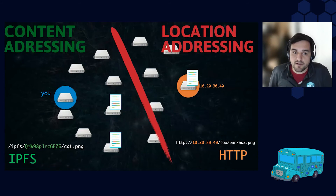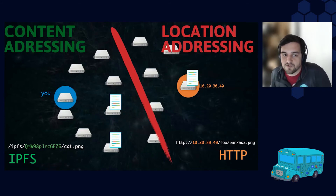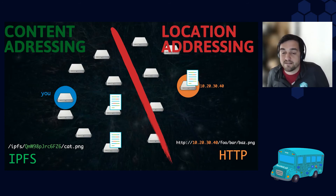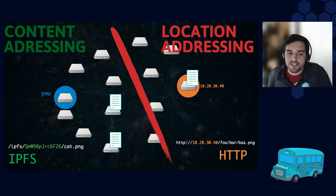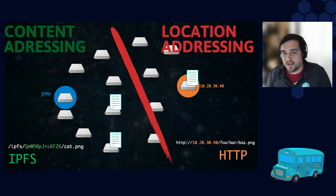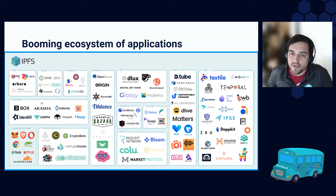In an example similar to before: in the case of location addressing, if there is a network split and the file is on the other side, you cannot access it anymore. But with IPFS, if the file is on your side, you can ask any machine, and when they deliver the file to you, you can validate that it is indeed the one you wanted. Before, you had to trust a central point of authority to give you the right file; now you can actually validate it on the client side. This simple construction, and all the technology built to enable it, has created a booming ecosystem of applications.